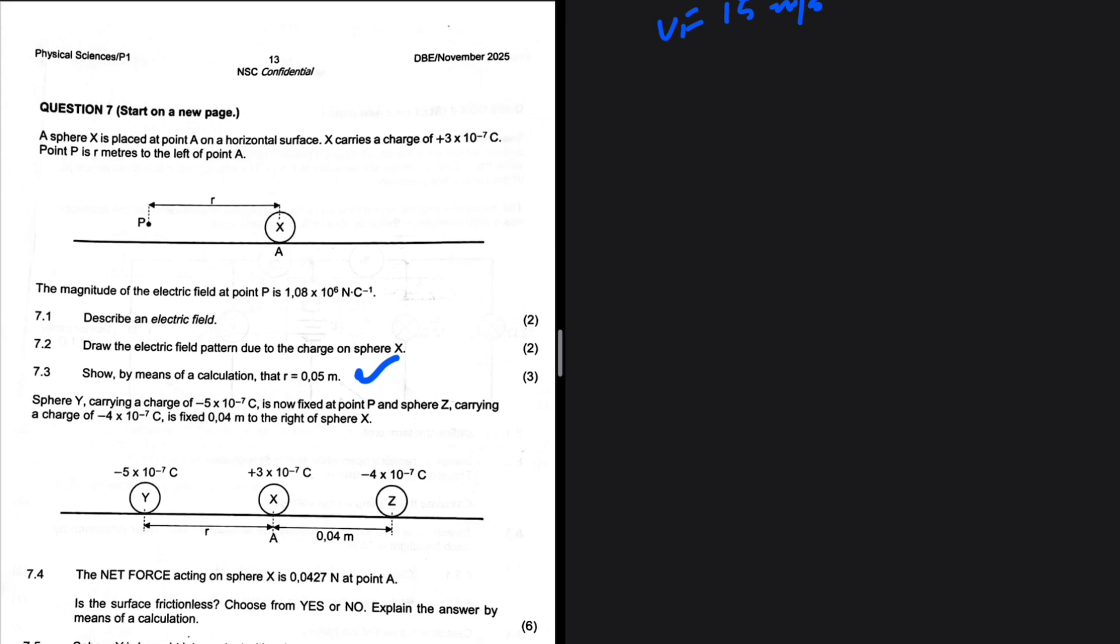Let's solve the equation. A sphere X is placed at point A on a horizontal surface. X carries a charge of plus 3 times 10 to the minus 7 coulombs. Point P is r meters to the left of point A. Show by means of a calculation that r equals 0.05.